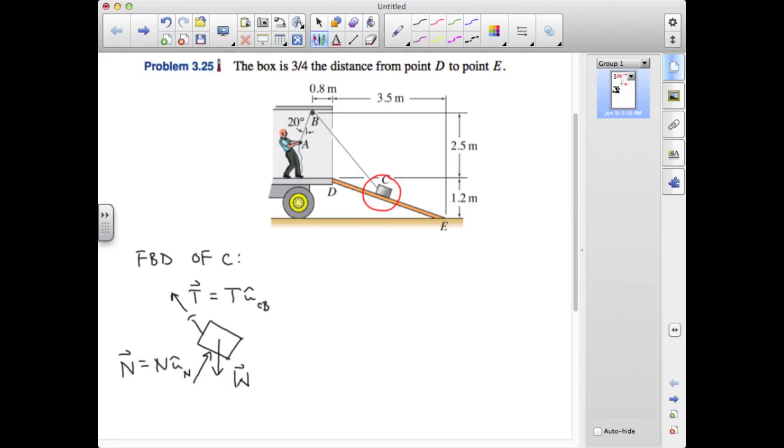So that's our free body diagram, and we have two unknowns, the tension in the rope and the normal force between the box and the ramp. Now it's really a matter of using the geometry of the problem to determine these unit vectors, and then we can go ahead and solve for the unknown tension and unknown normal force.